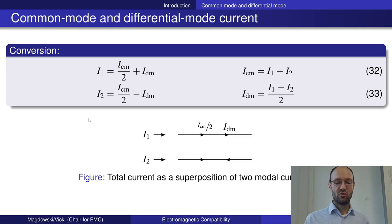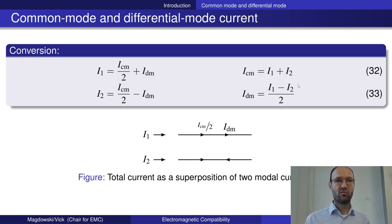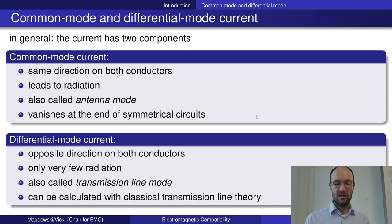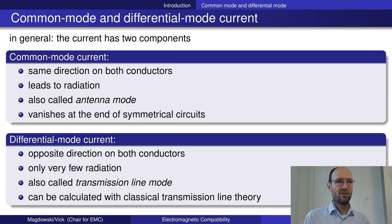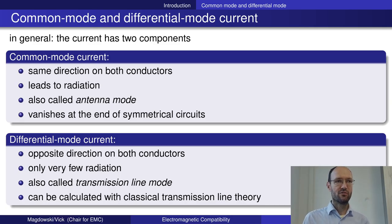You can use similar equations as before for this conversion. Now, why is this important? The common mode current is the bad current that we don't want to have. The differential mode current is the good current — the current that is necessary to operate the circuit, to transfer energy or information from the source to the load.